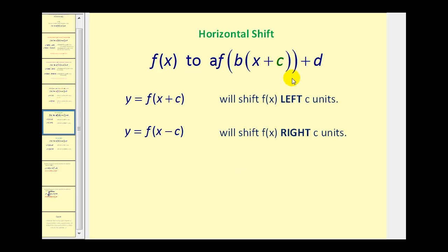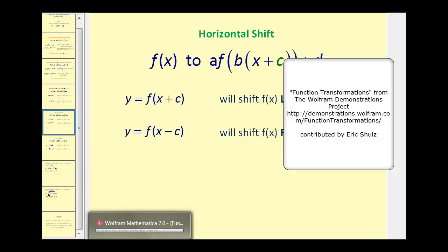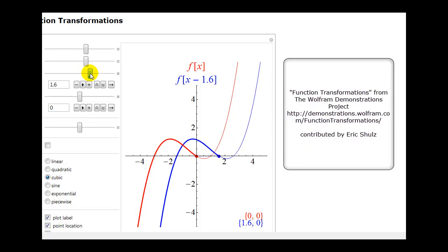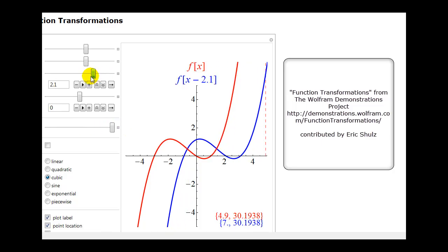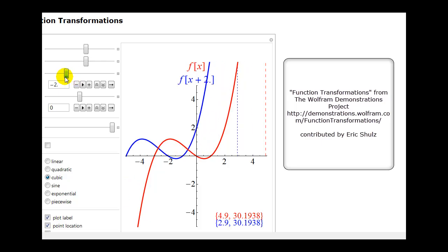Now let's take a look at how c affects the graph. If we have y equals f of the quantity x plus c, this will shift f of x left c units. And if we have y equals f of the quantity x minus c, this will shift the function right c units. So if we see x plus c it shifts left, and if we see x minus c it shifts right — this is almost the opposite of what you might think. Notice when we see x minus a constant the blue function is shifted right c units, and if we see f of x plus a constant the graph is shifted left c units.